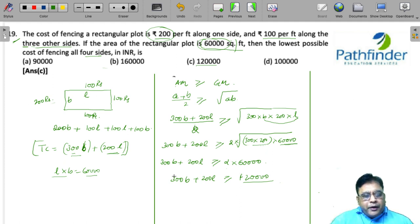So, the moment we get this, we can easily identify it. Since it is greater than equal to 1,20,000, the minimum value has to be 1,20,000 which is your answer.